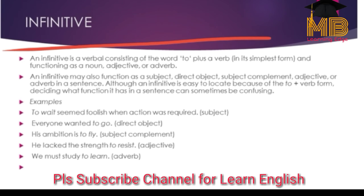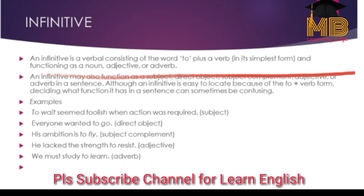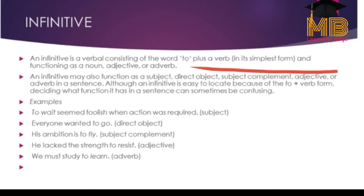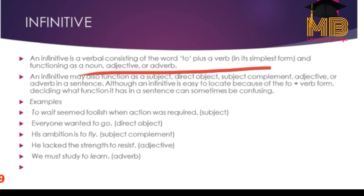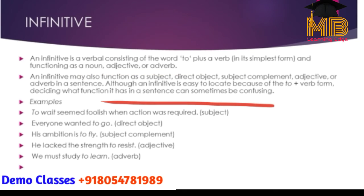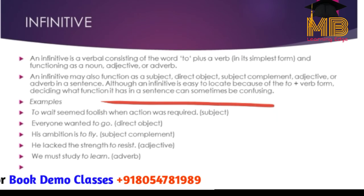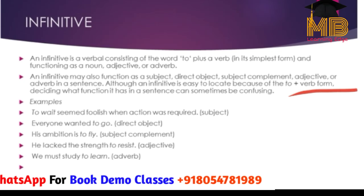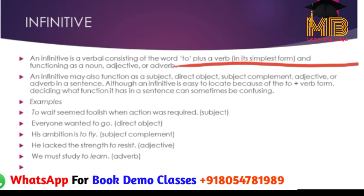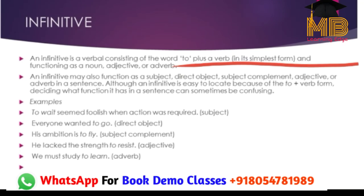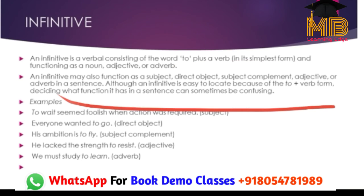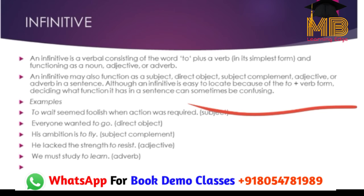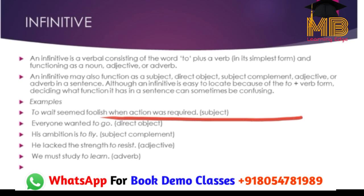Next, we come to infinitives. An infinitive is a verbal consisting of the word 'to' plus a verb in its simplest form, which can act as a noun, adjective, or adverb. It may function as a subject, direct object, subject complement, adjective, or adverb in the sentence. Although an infinitive is easy to locate because of the 'to + verb' form, deciding what its function is can be confusing because it can function as many different things.